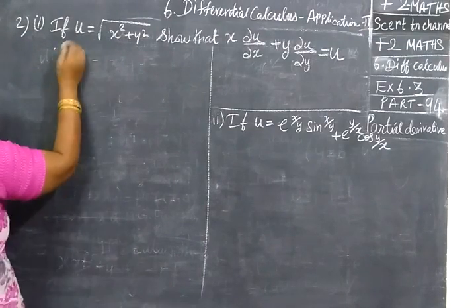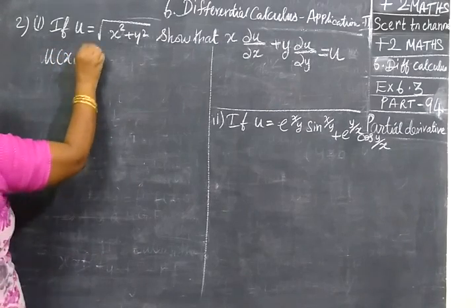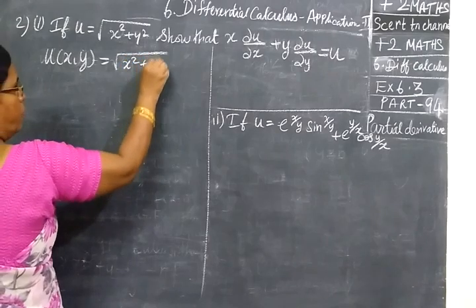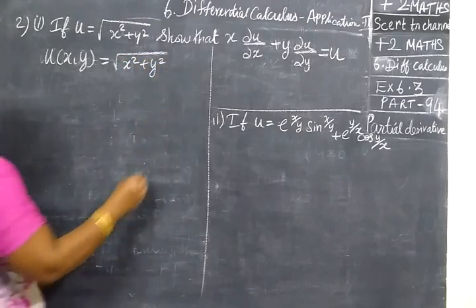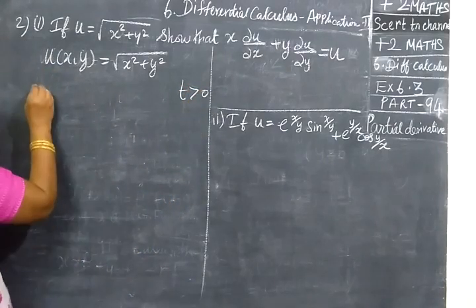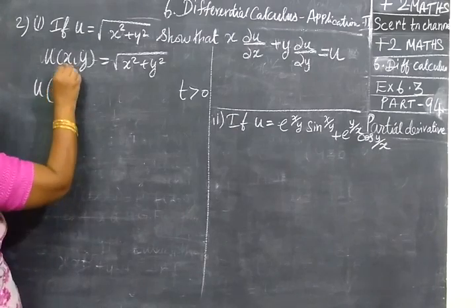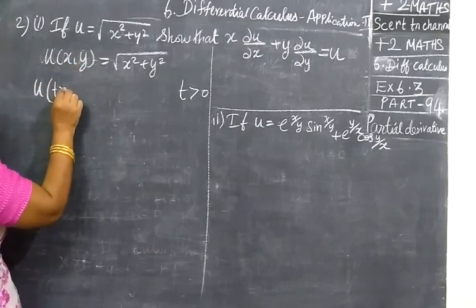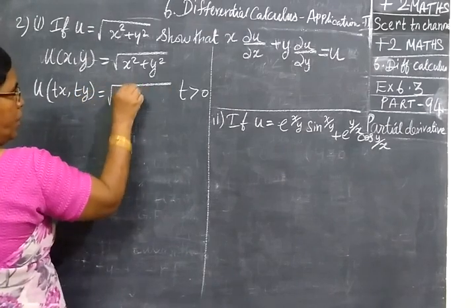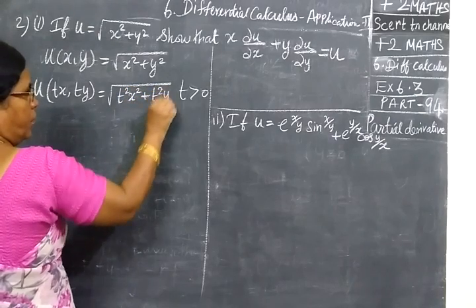Let u equal to root of x square plus y square. We write it as u of x, y equal to root of x square plus y square. Now we are taking t greater than 0, multiplying the variables x and y by t. So we get t square x square plus t square y square.